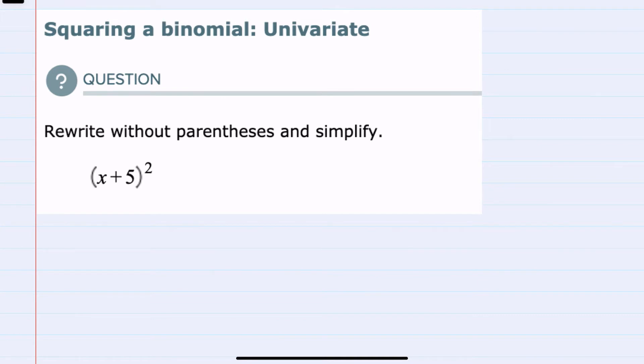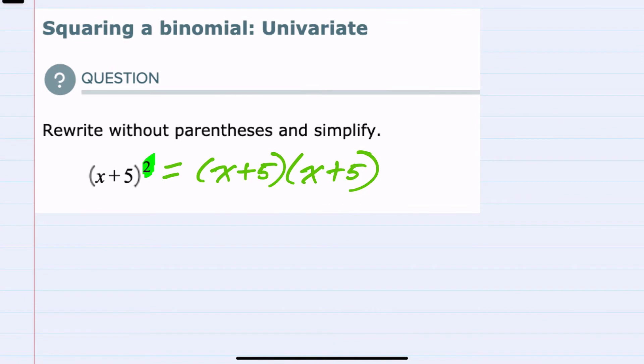So rewriting this without parentheses, since we have an expression here being squared, we can rewrite this as the x plus 5 being multiplied by x plus 5. That's the expanded form of squaring, is to rewrite it as the base times itself.